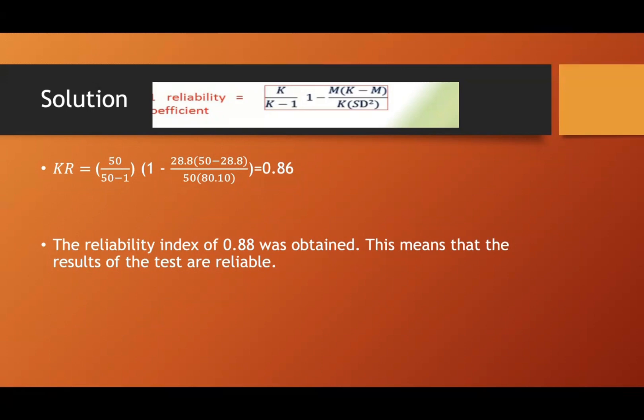times the number of items minus the mean over the number of items times the variance, S squared. SD squared is just the variance, or the square of the standard deviation. And you come up 0.86. That is 0.86, not 0.88. So the reliability index of 0.86 was obtained.